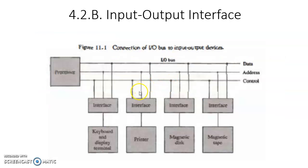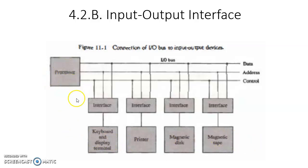Let us look at the connection of the I/O bus to input-output devices. This is the processor CPU, and these are the peripheral devices: keyboard, display, printer, magnetic disk, magnetic tapes. These are the various input and output devices which are connected to the processor through an interface. If you look here, each and every peripheral device has its own interface, because the same interface cannot be used for all peripheral devices.